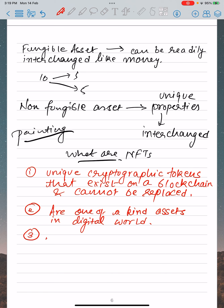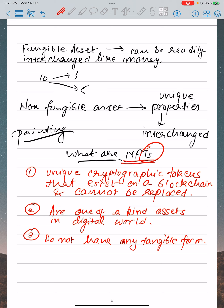Third point: NFTs do not have any tangible form — because they are digital, you can't touch them. The digital tokens can be thought of as certificates of ownership of virtual or physical assets. Assets can be tokenized with a digital certificate of ownership, and you cannot forge these records.